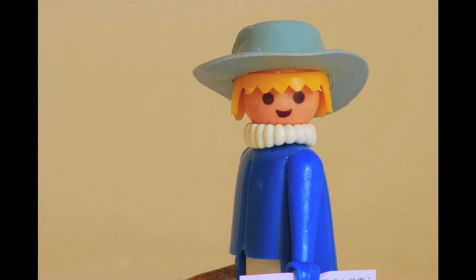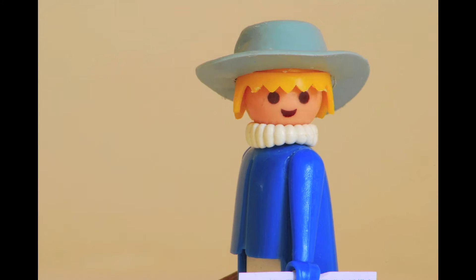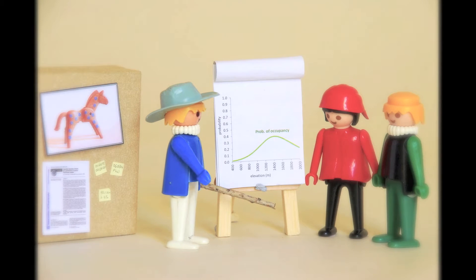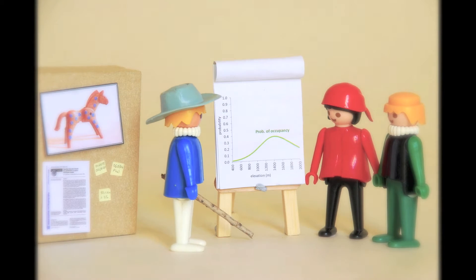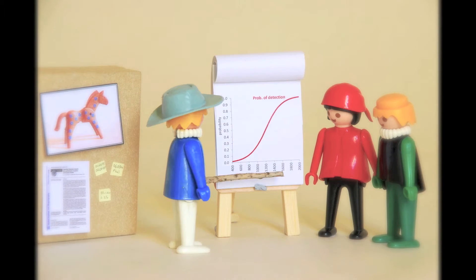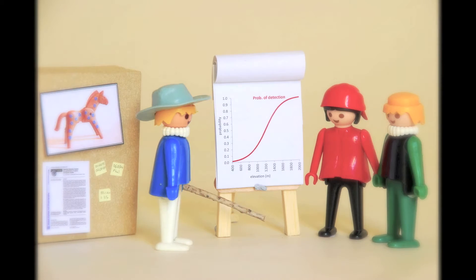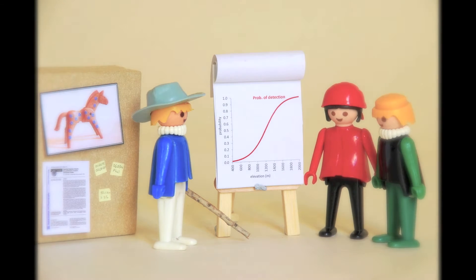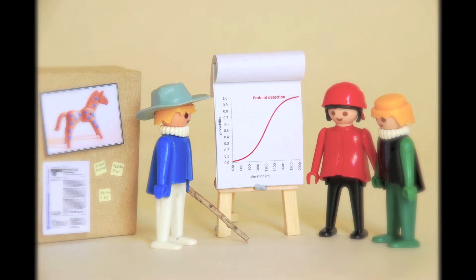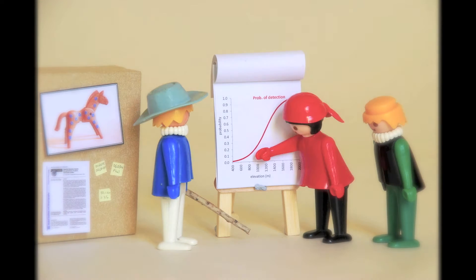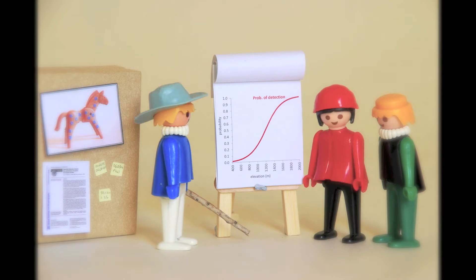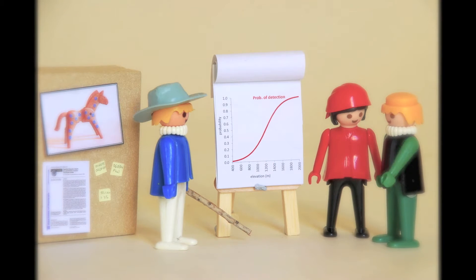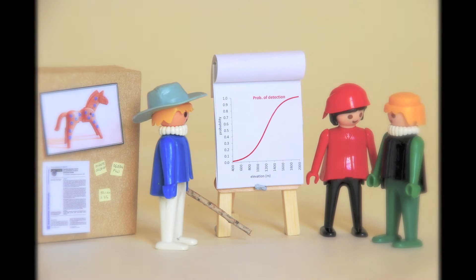But shortly after our analysis was completed, I read a paper that made me reconsider our results. I wondered: what if our survey methods did not ensure perfect detection of the species? It was really difficult to see anything in the tall grassy lowlands — maybe that's why we saw fewer horses at lower elevations. But we recorded our data in the form of times to detection — could that help?